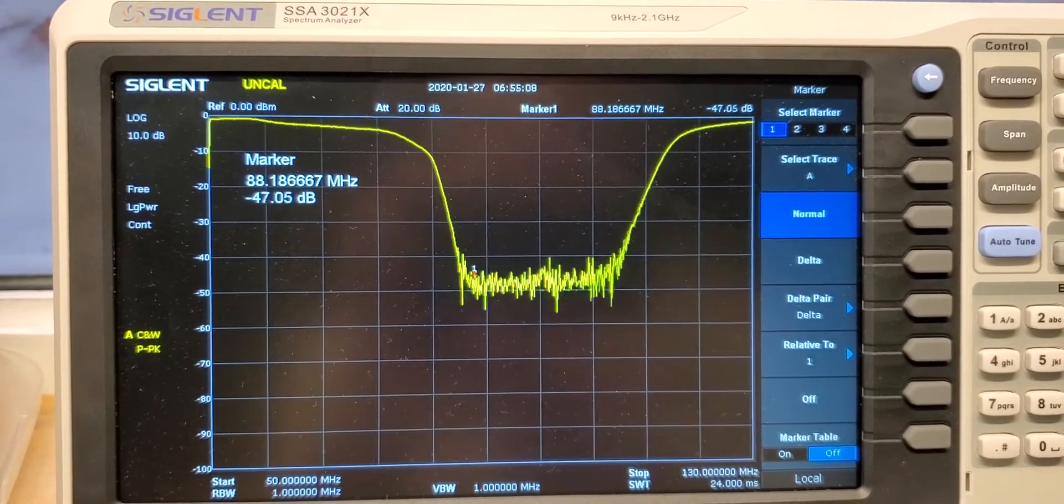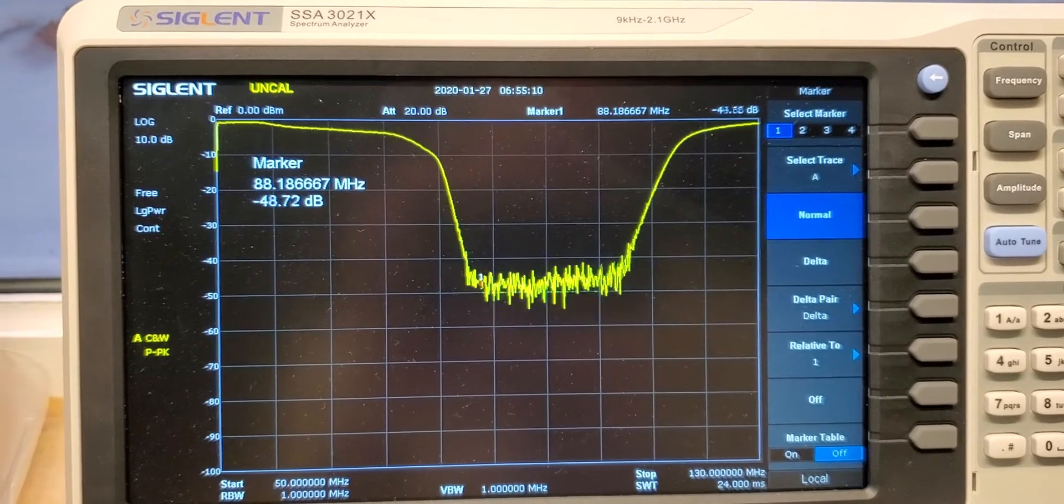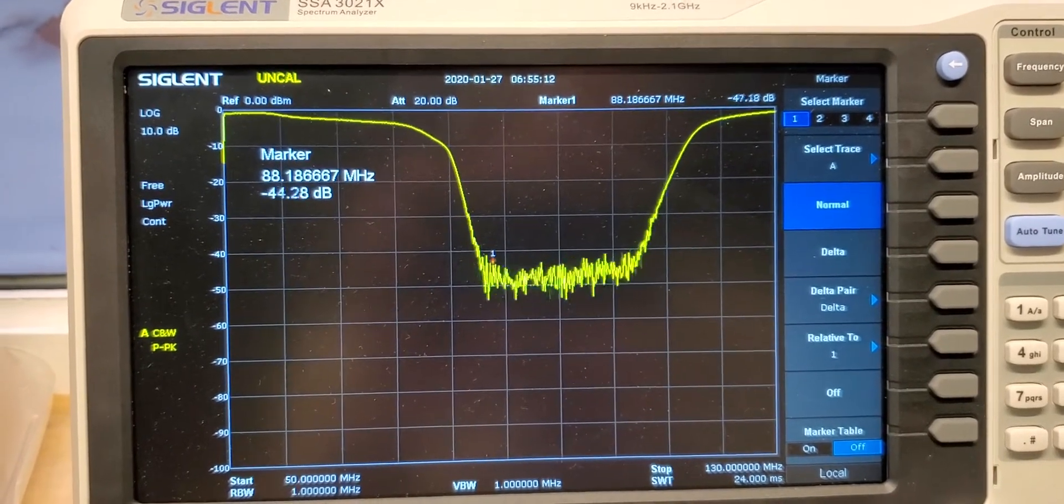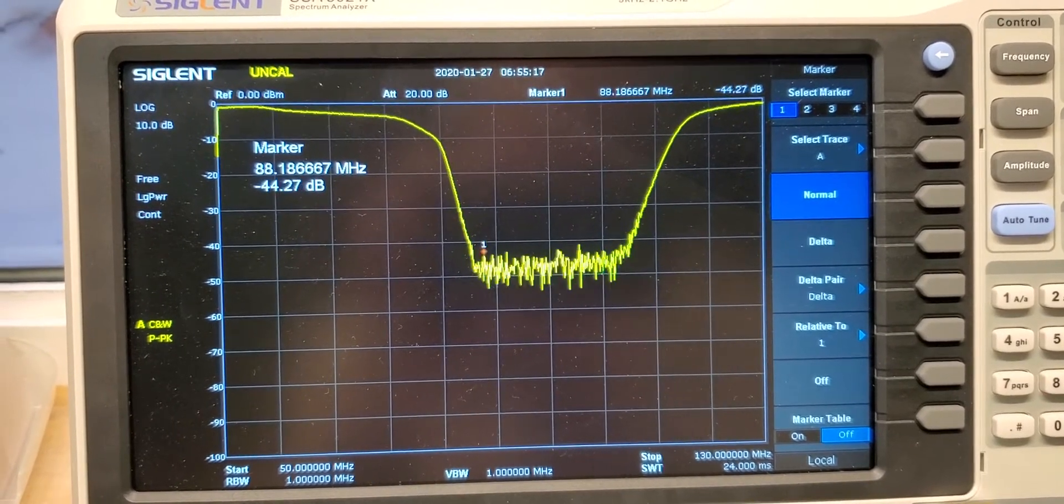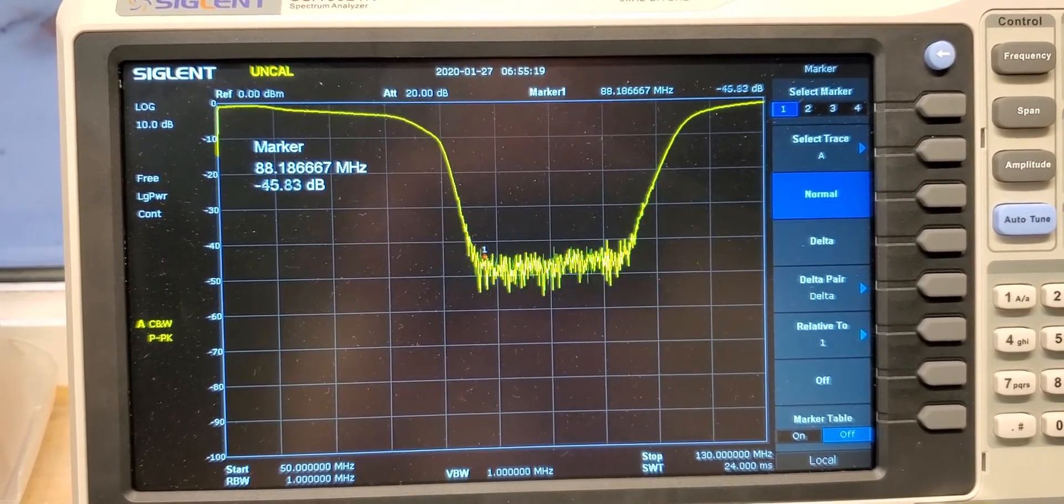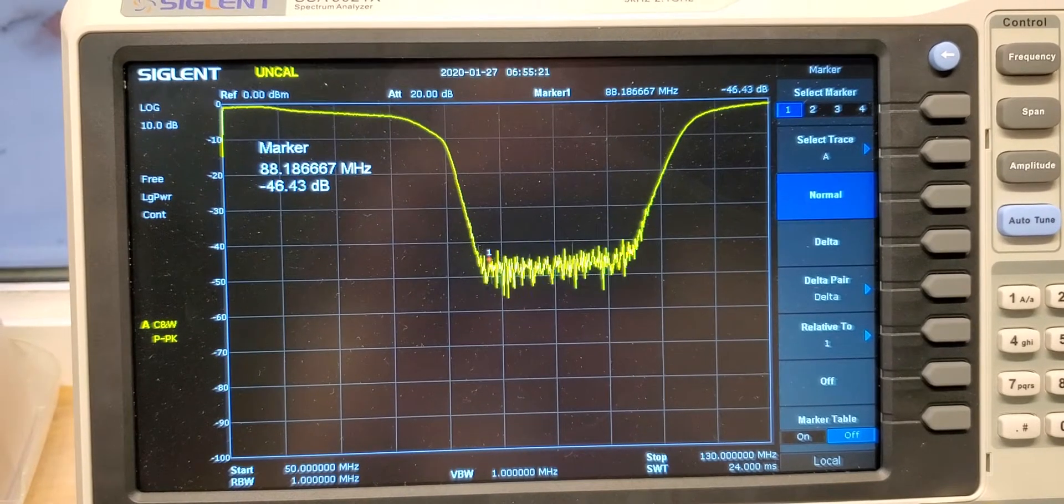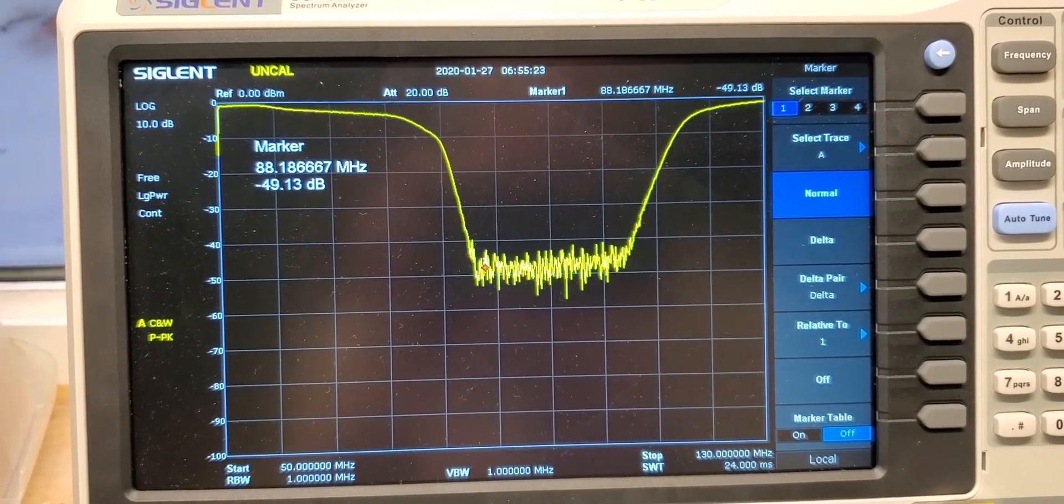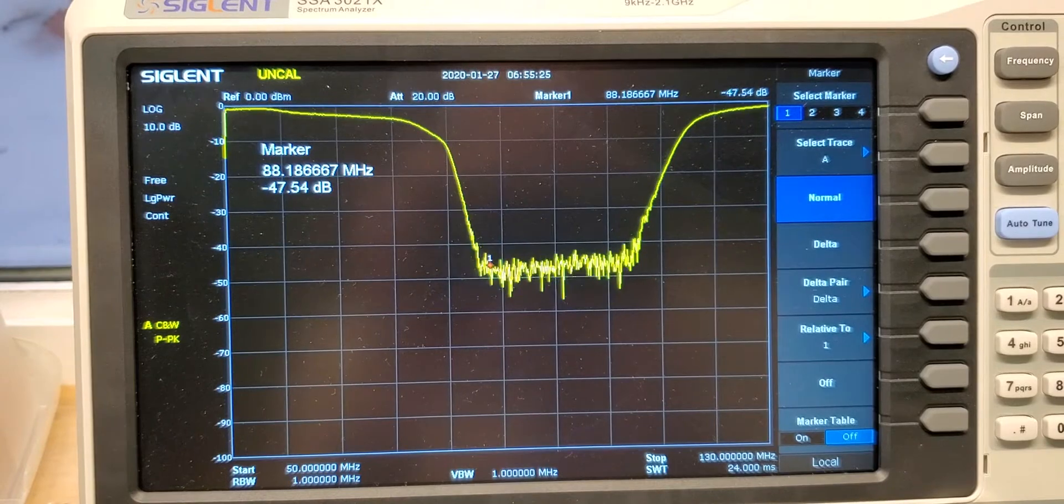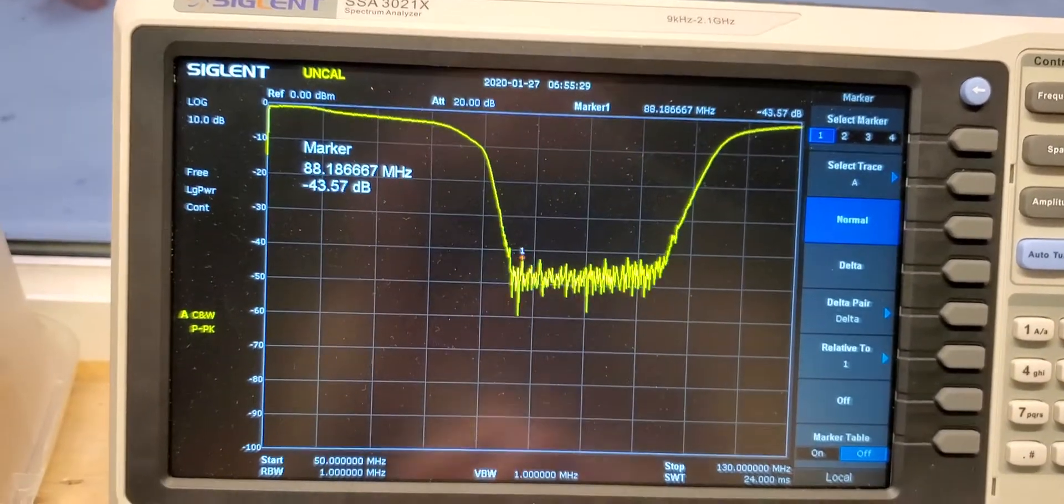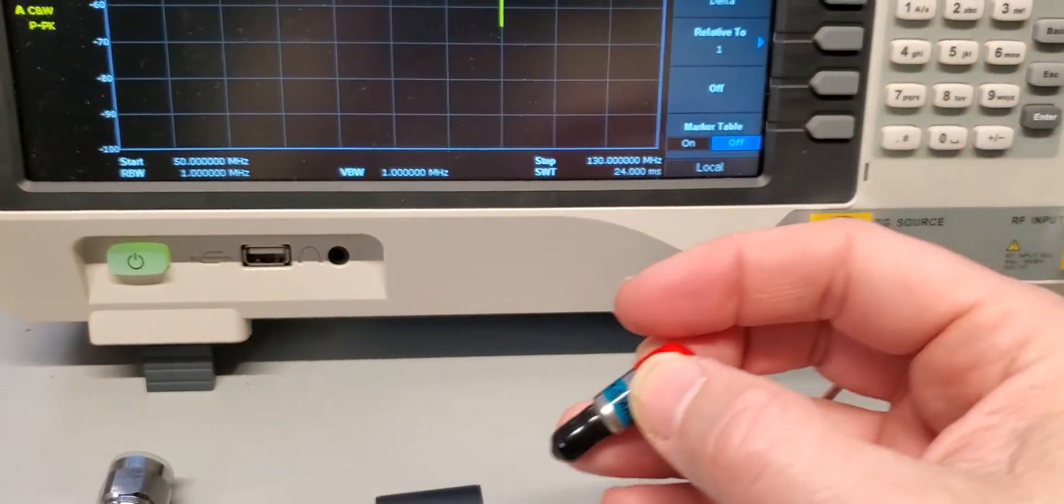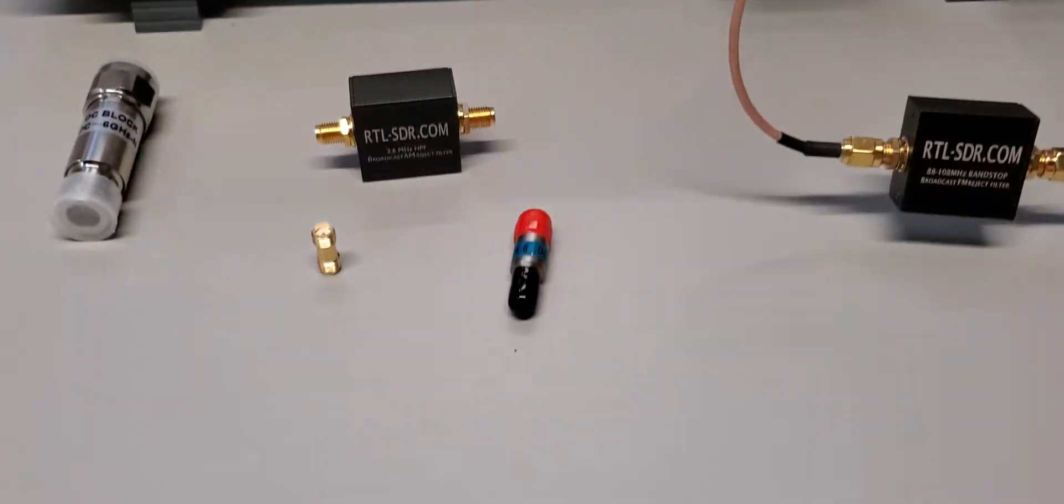Personally I didn't really have any need yet for using the FM band stop filter for the things that I did. I haven't done too much and I don't have a strong FM station that seems to cause issues. So let's go ahead and put in the DC block and see what that does.